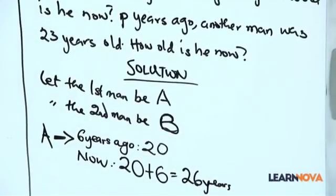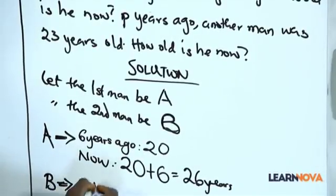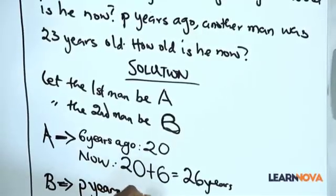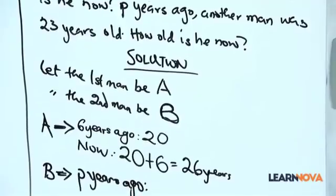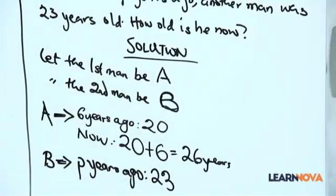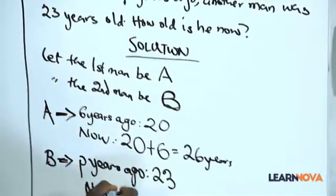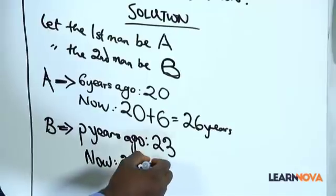Now let's go to the second man. P years ago, man B was twenty-three years old. How old will he be now? He'll be twenty-three plus P. Note that we do not actually know how many years P represents, but in algebra you can add numbers and letters. So man B's current age is twenty-three plus P.